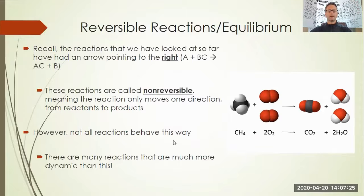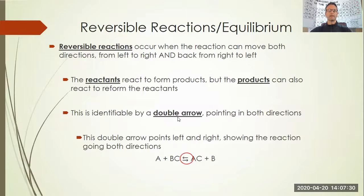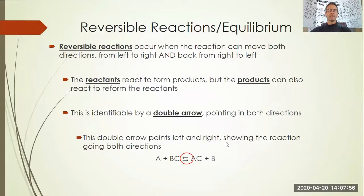However, not all reactions behave this way. There are many reactions that are much more dynamic — we call those reversible reactions. Reversible reactions occur when the reaction can move both directions: from left to right and back from right to left. So the reactants react to form products initially, but the products can also react to reform the reactants. This is identifiable by a double arrow pointing in both directions.